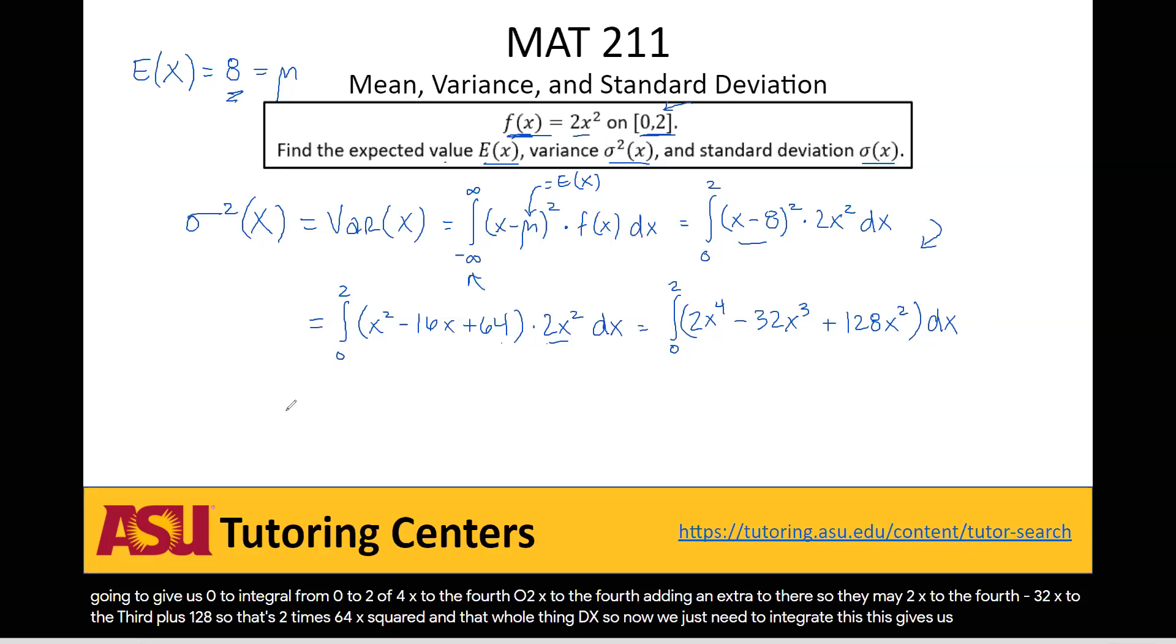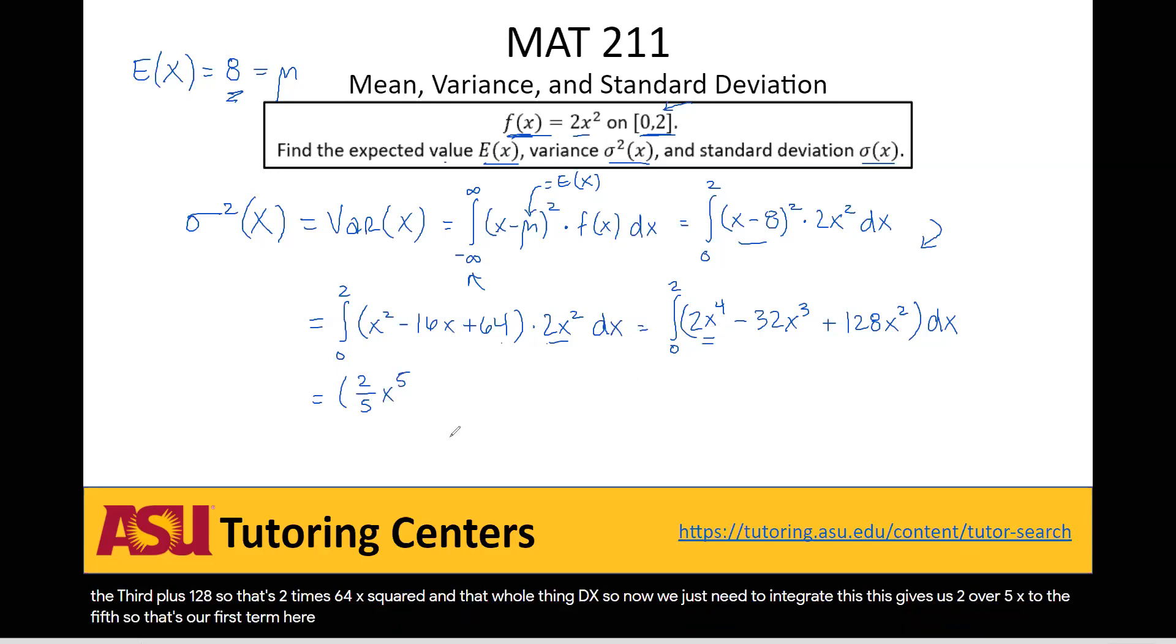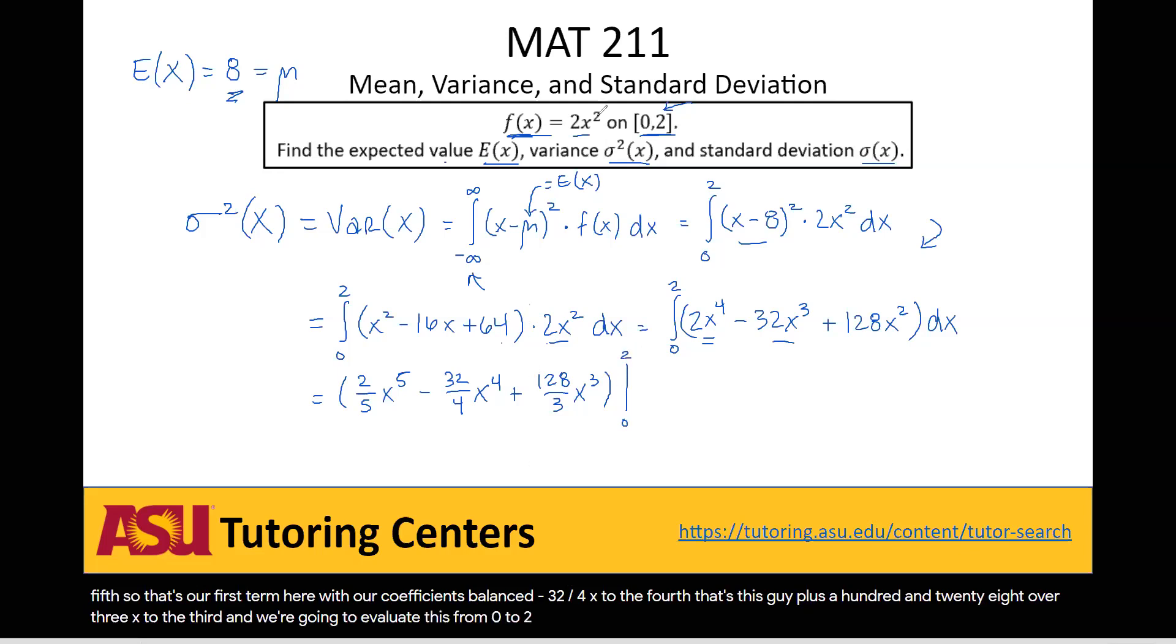This gives us 2 over 5x to the 5th. So that's our first term here with our coefficients balanced. Minus 32 over 4x to the 4th. That's this guy. Plus 128 over 3, x to the 3rd. And we're going to evaluate this from 0 to 2. Now notice that 32 over 4 is actually just 8. So let's just write in 8 here and simplify our problem a little bit further.